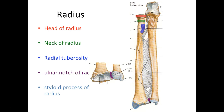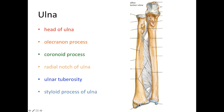Lastly on the radius we have the styloid process. Before smartphones, there used to be devices called Palm Pilots where people would jot notes using a pen-like structure called a stylus — that's what they used to call pens. So the styloid process is this pointed, pen-like structure on the radius.